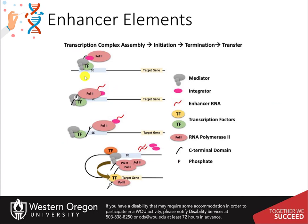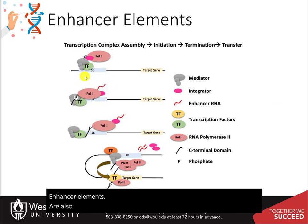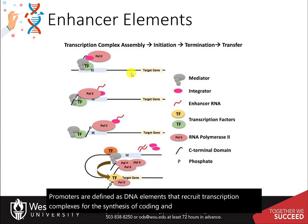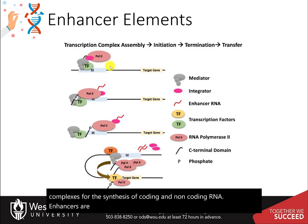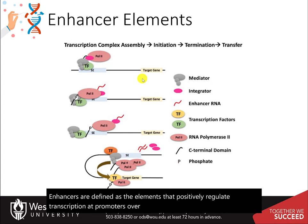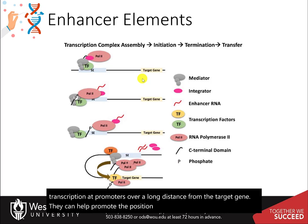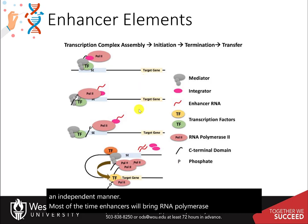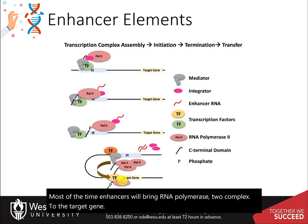Enhancer elements are also important for the initiation of transcription. Promoters are defined as DNA elements that recruit transcription complexes for the synthesis of coding and non-coding RNA. Enhancers are defined as elements that positively regulate transcription at promoters over a long distance from the target gene. They can help promote the position and orientation of cofactors in an independent manner. Most of the time, enhancers will bring the RNA polymerase II complex to the target gene and help mediate transcription.